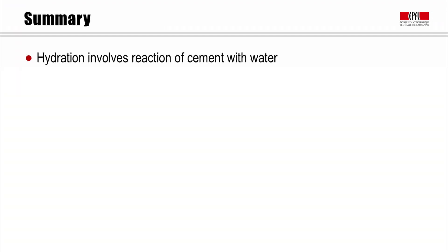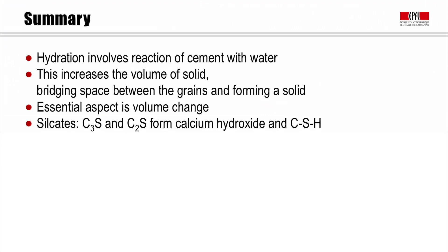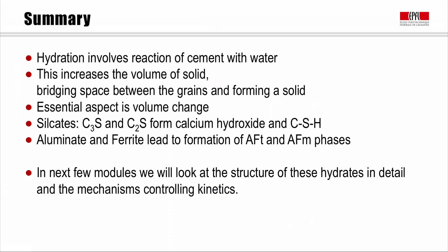So, to finish this video, and just to summarize, what we've seen here is the hydration reaction involves the reaction of cement with water. And the critical aspect of this is the increase in solid volume, which bridges the space between grains, forming a rigid solid. So, the calcium silicates, C3S and C2S, generally form calcium hydroxide and CSH, while the aluminate and ferrite phases lead to the formation of these phases we call AFT and AFM. So, in the next few modules, we're going to look at the structure of these hydrates in detail and the mechanisms controlling kinetics. So, we'll hope you'll come back to listen to those.